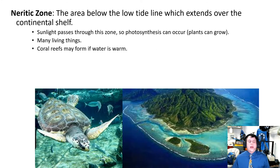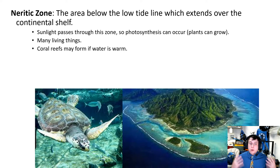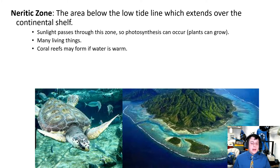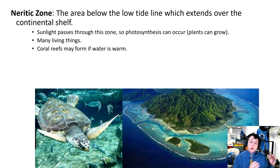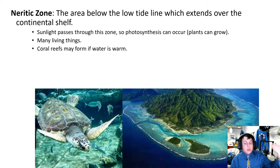Moving out from the intertidal zone, you get to the neritic zone, where the water is shallow enough to allow photosynthesis almost all the way to the bottom. Sunlight passes through this zone so photosynthesis can occur. You can get large algae — technically in the kingdom Protista, not true plants. You have very productive waters, a lot of fish, and a lot of economic benefit since people fish here extensively. In cold areas you can get large kelp forests; in warm areas, you can get coral reefs.